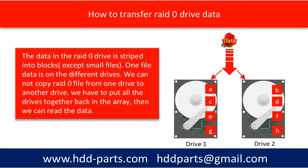The data in the RAID 0 drive is striped into blocks, except small files. One file's data is on different drives. We cannot copy a RAID 0 file from one drive to another drive. We have to put all the drives together back to the array, then we can read the data.